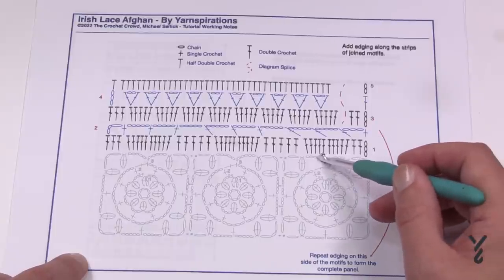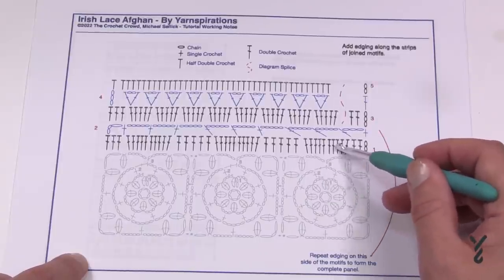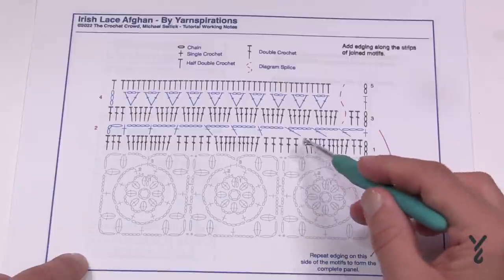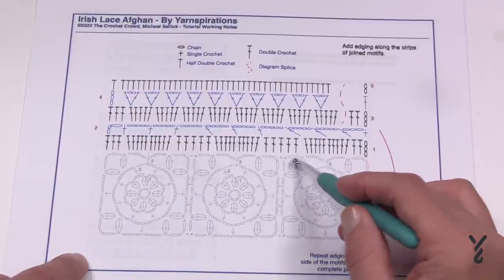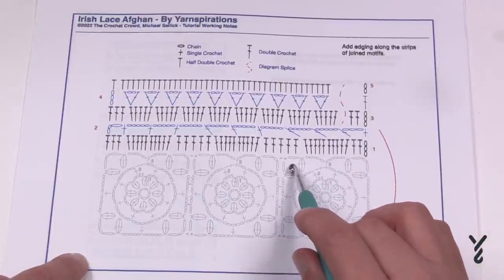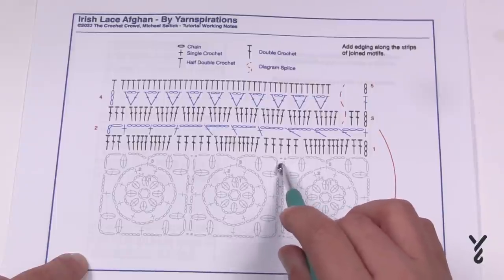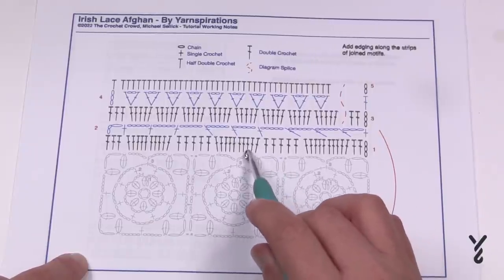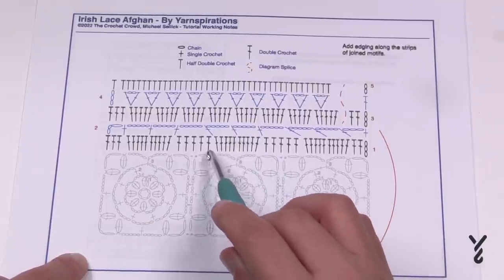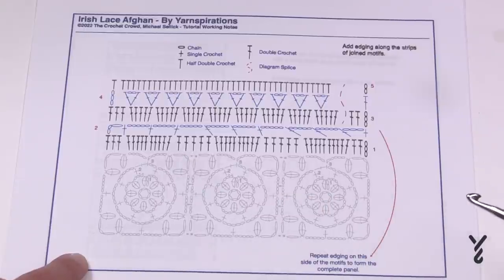Then each one of these chain five spaces that you'll have will each have five double crochets. Then when you're back over here to do this there will be two double crochet in this space, one in the join and then two into this space. Then you put five into these chain five spaces again and you're gonna do that all the way across.